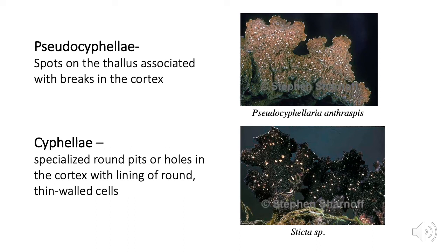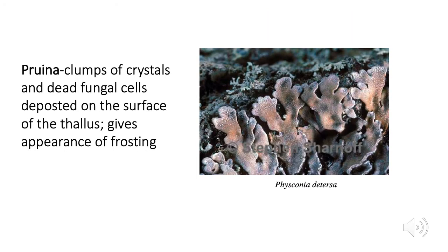Pseudocephalia and cephalia are small pits or breaks in the cortex. Cephalia are like little craters containing specialized cells — a more regular specialized feature — while pseudocephalia are more irregular spots associated with cracks in the cortex. We don't know that much about why they're there, but they're important for identifying some common Bay Area species. Pseudocephalia is actually the more important one because it occurs in more different kinds of lichens, whereas cephalia are limited to one fairly uncommon group. Another thing you might see on the surface of lichens are very fine pale crystals called pruina — a little tricky because you might mix them up with soredia, but pruina are typically finer and less clustered.